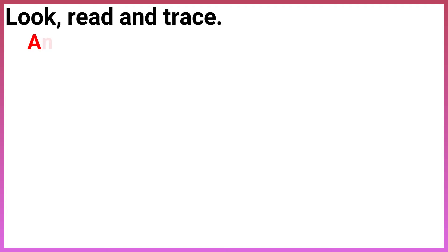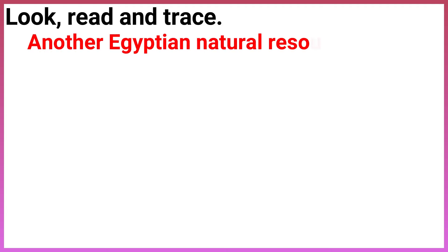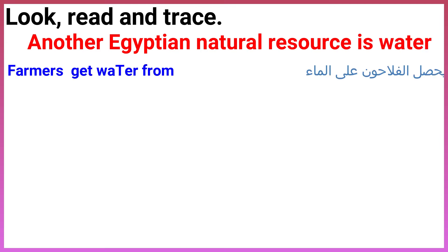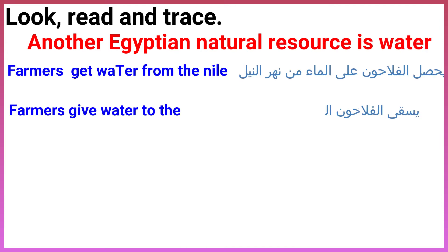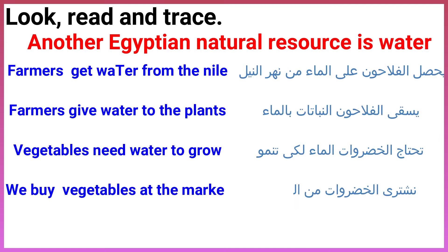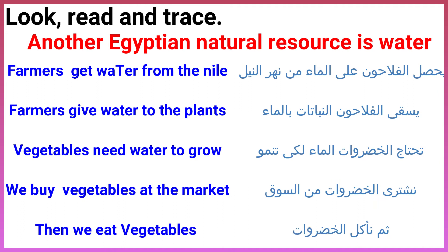Look, read and trace. Another Egyptian natural resource is water. Farmers get water from the Nile. Farmers give water to the plants. Vegetables need water to grow. We buy vegetables at the market, then we eat vegetables.